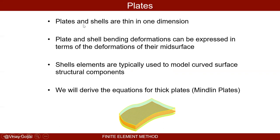What are plates and shells? Plates and shells are thin in one direction — very thin in this direction but can be longer in the other directions. Take the aircraft skin: it's pretty long in two directions, along the length of the aircraft and circumferentially, but very thin in the thickness direction. So plate elements are perfect. We don't have to model the thickness in 3D; that would become too expensive. Plate and shell bending deformations can be expressed in terms of the deformations of their mid surface. Shell elements are typically used to model curved surfaces.